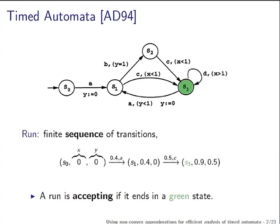To get something much more meaningful out of a finite description, you also have the power of resetting a clock back to 0 when you take a transition. This reset allows you to measure time duration between events. This is what a timed automaton is.